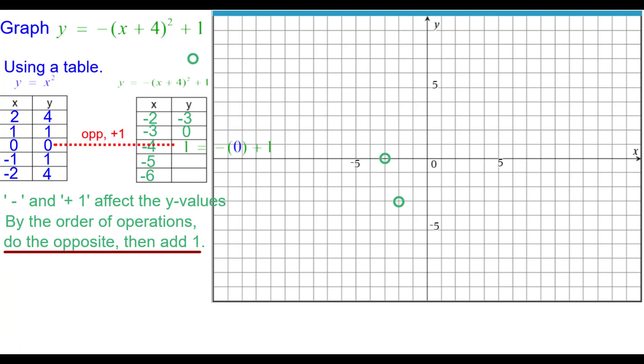So the opposite of 0 is 0 plus 1 is 1. Negative 4 comma 1. Opposite of 1 is negative 1 plus positive 1 is 0. So negative 5 comma 0. And the opposite of 4, negative 4 plus 1 is negative 3. Negative 6 comma negative 3. There are 5 points.